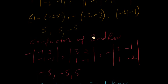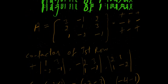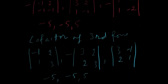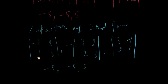The cofactor of the second row is minus 5, minus 5, and 5. For the cofactor of the third row, we have to calculate the cofactor of 1, minus 2, and minus 1. You should remember plus minus plus with the minor. The cofactor of the third row is minus 5, minus 5, and 5.